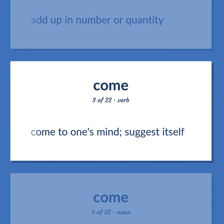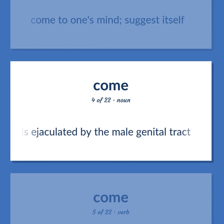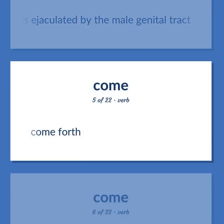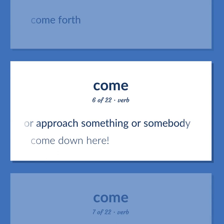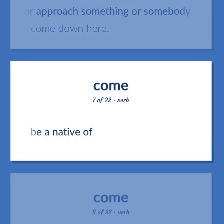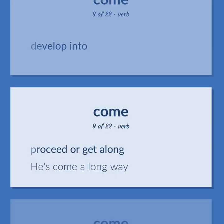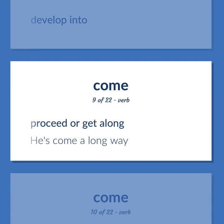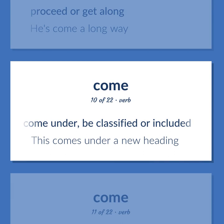Come: To come to one's mind; suggest itself. The thick white fluid containing spermatozoa that is ejaculated by the male genital tract. To come forth. To move toward, travel toward something or somebody — come down here. To be a native of. To develop into. To proceed or get along — he's come a long way. To come under; be classified or included — this comes under a new heading.